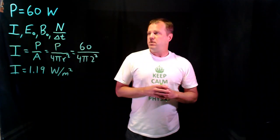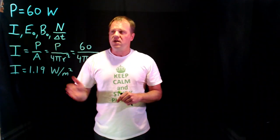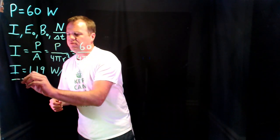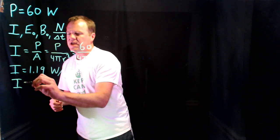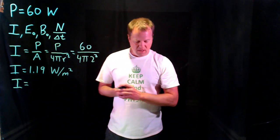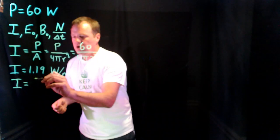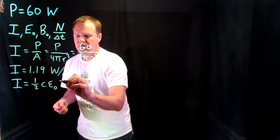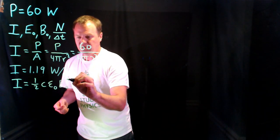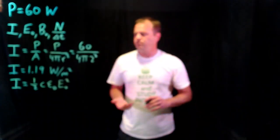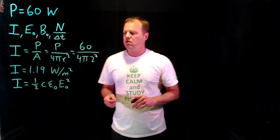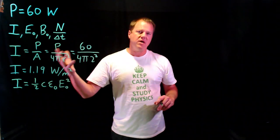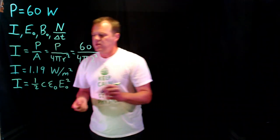Now we can use the intensity to determine the electric and magnetic fields. There's a relationship between intensity and the electric field: intensity equals one-half the speed of light times the permittivity of free space times the magnitude of the electric field squared. These two are constants and I just calculated the intensity, so I can do some algebra to solve for the electric field.